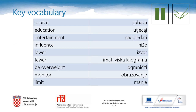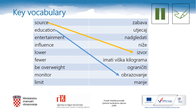Before we start reading the text about television, these are some words that we'll need. Would you please stop the video lesson and do the matching task into your notebooks. Pause the video now and see you in a while. That was easy, wasn't it? Let us check the answers now. The first one: source — izvor. Education — obrazovanje.